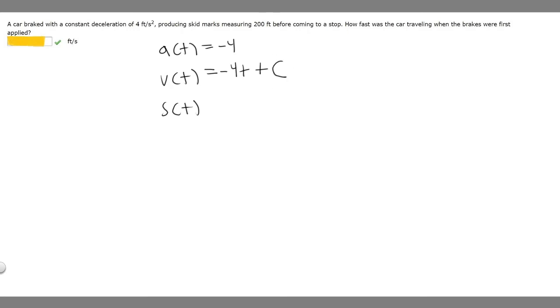Now let's find our position function by taking the antiderivative of this. The antiderivative of minus 4t is t squared over 2, then we're multiplying it by minus 4, so it becomes minus 4t squared over 2, which just becomes minus 2t squared. So we have minus 2t squared plus Ct plus D.